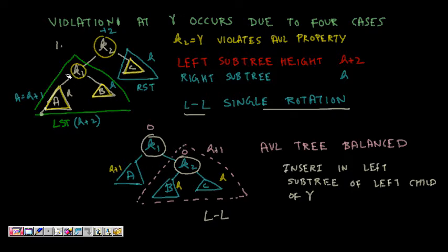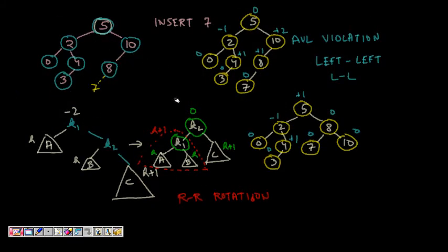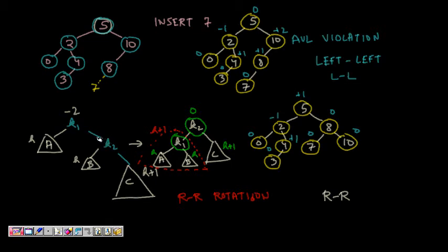This is the LL rotation — when inserting in the left subtree of the left child causes an AVL violation, we do a single LL rotation. Next is the RR single rotation, where we are inserting into the right subtree of the right child of an unbalanced node. Here k1 is the node violating the AVL property.